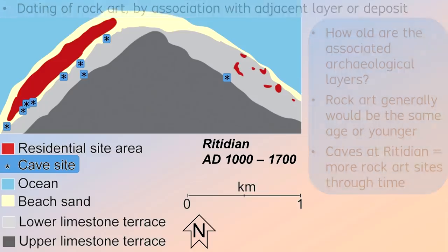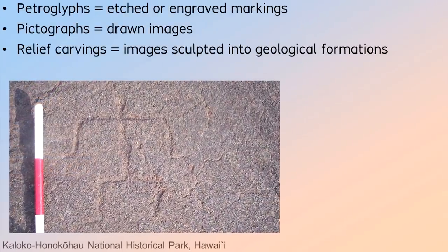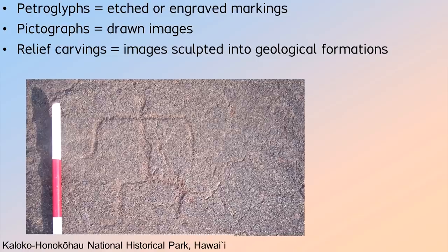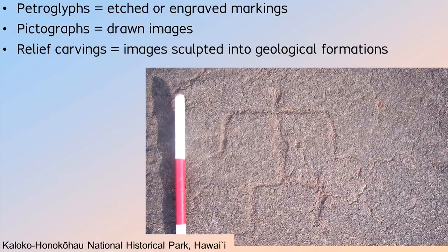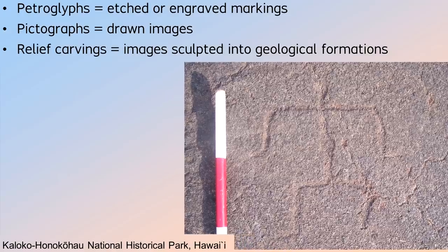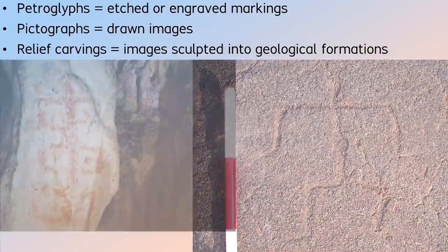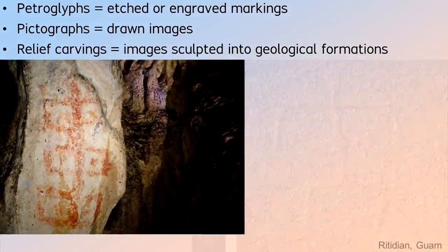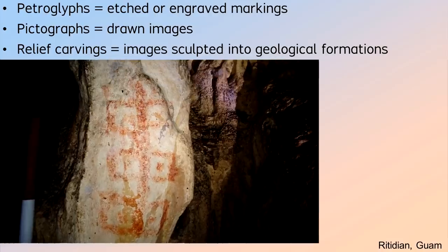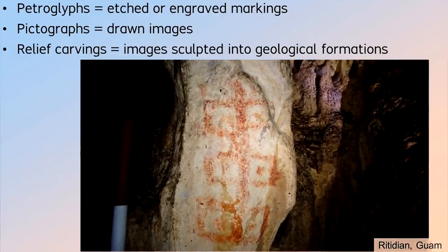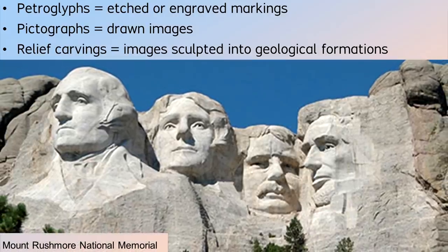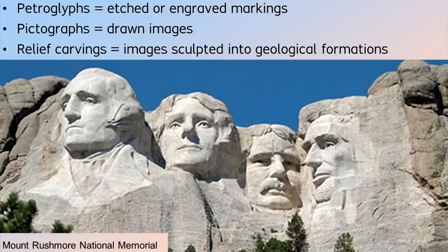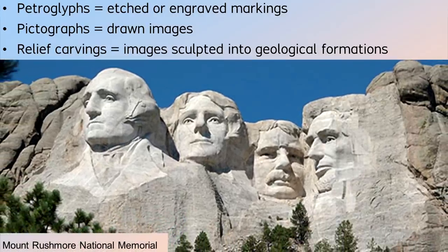Regarding the forms and styles of rock art, at least three major categories can be distinguished. First, petroglyphs refer to etched or engraved markings. Second, pictographs refer to drawn images. Third, rare cases of relief carvings refer to images sculpted in natural geological formations.